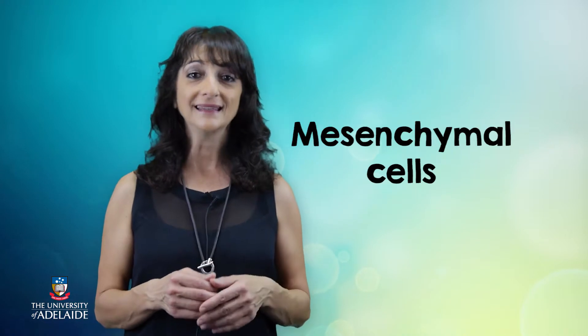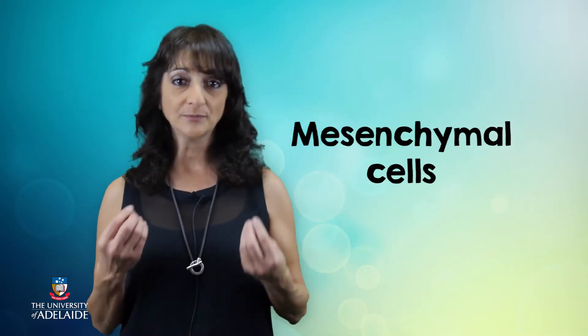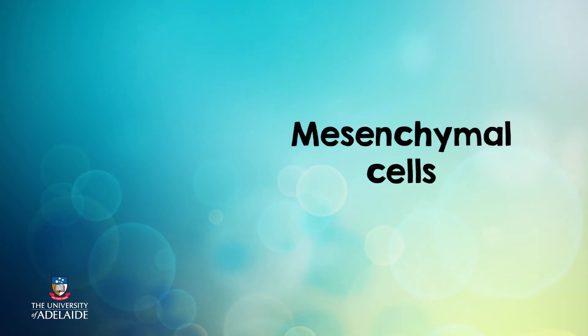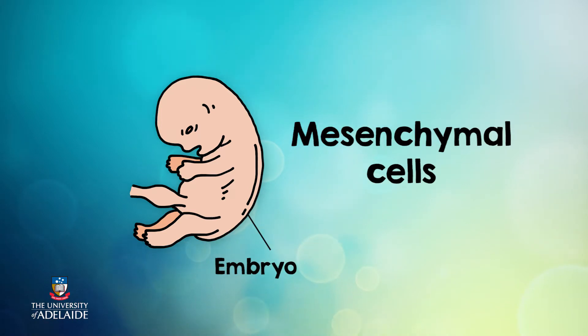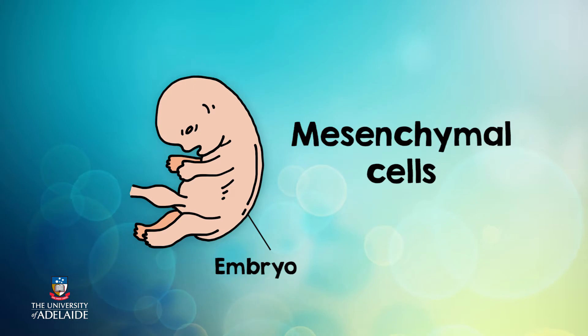Amongst the wandering cells we find many cells of our immune system such as plasma cells, wandering macrophages and white blood cells. There are also special cells referred to as mesenchymal cells. These are stem cells responsible for the repair of the tissue. They have been around since the development of the embryo and are capable of changing into a variety of cells based on the needs of the tissue.